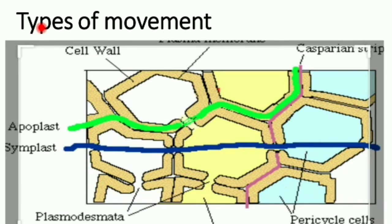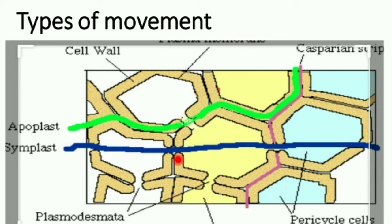There are two types of water movement in plants: apoplast and symplast. In the apoplast pathway, water moves through the intercellular space and does not enter into the cell. In the symplast pathway, water enters into the cytoplasm of the cell and is then transported to adjacent cells through channels called plasmodesmata.